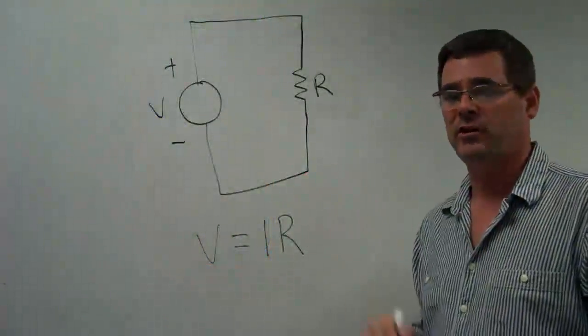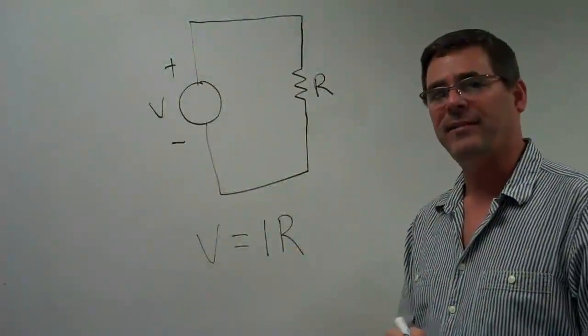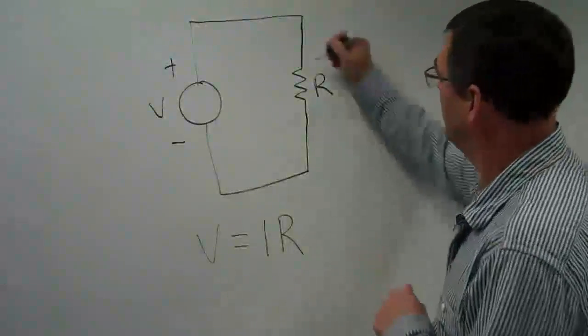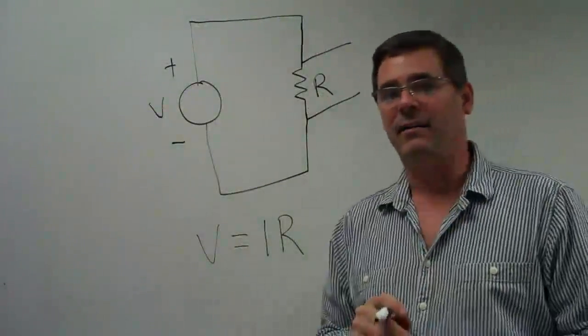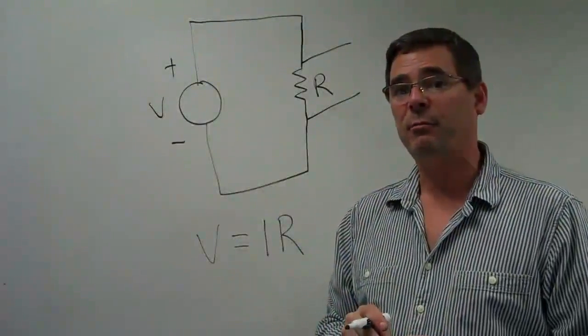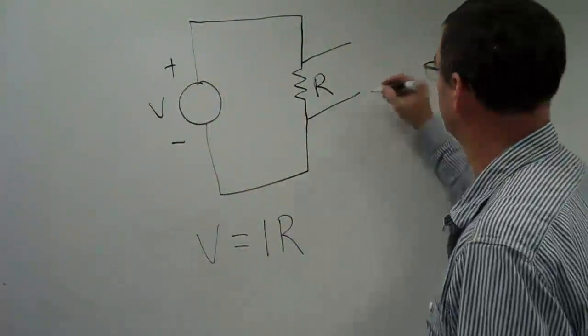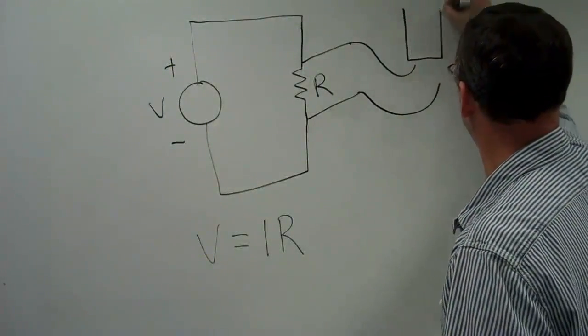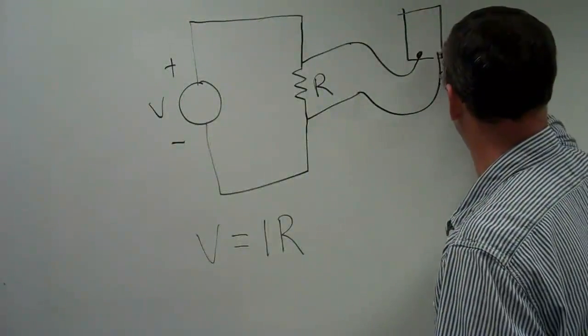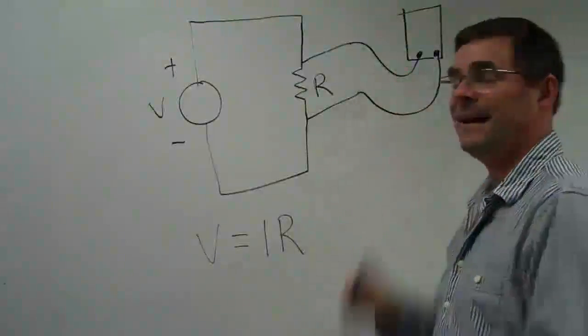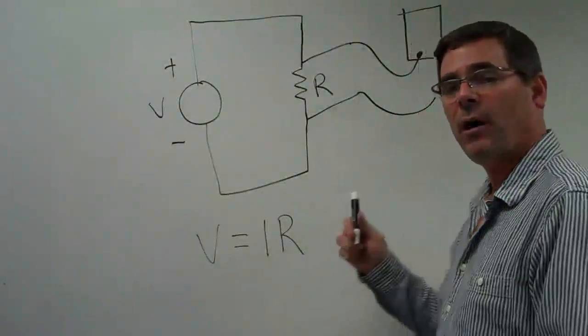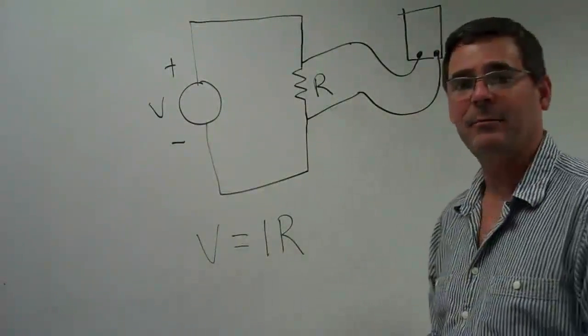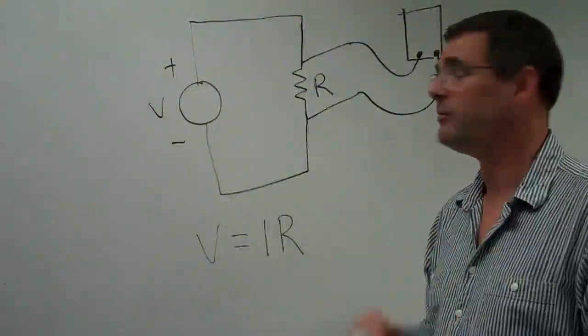To measure the voltage across the resistor, it's very simple. I need only to take the probes of my meter and touch them to either side of the resistor. Each of those probes connected to a wire to the meter. One wire is connected to the common and one wire is connected to the V for volts. Then the display simply reads out the voltage across the resistor R.